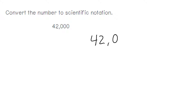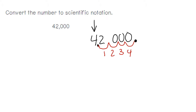Last problem: 42,000. In this problem, there is no decimal point, meaning it's here at the end. We want to move it behind the first number, which is a four. To do that, we move the decimal four times. When we write the final answer, we write it as 4.2 — do not write the zeros. We always write times 10, and it's to the positive fourth power. 42,000 is a large number, and large numbers are represented by positive exponents. The exponent is a four because we moved the decimal point four times.